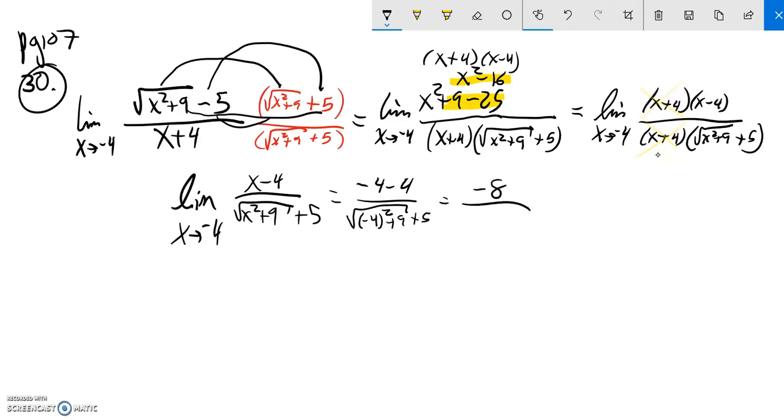So that's negative 8 up here. Negative 4 squared is 16, 16 plus 9 is 25, square root of 25 is 5, and it's still plus 5. So negative 8 tenths, which is the same as negative 4 fifths.